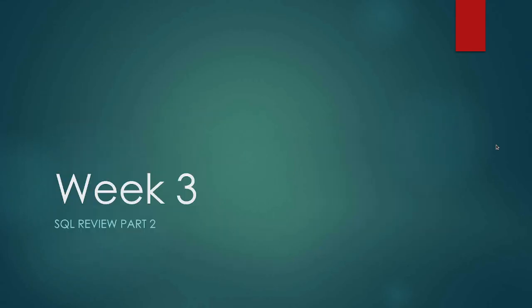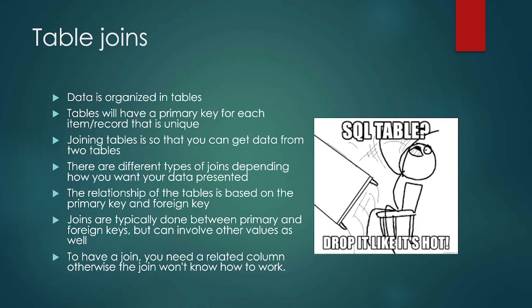When we talk about tables, the data in our database is organized into tables. The tables have a primary key for each record. Joining tables allows us to get data from two or more tables. There are different types of joins depending on the type of data we are looking for. The relationship of the tables is based on the primary key and the foreign key. You can involve other values too, but this is the basic way. To have a join you need a related column.